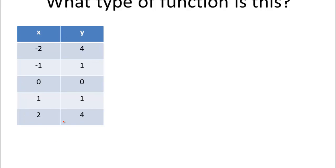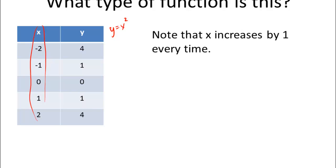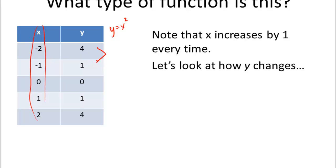Let's look at another example. You should recognize this data as y equals x squared. This is one of the reasons why it's important that you know your parent functions. Again, note that x is always increasing by 1: negative 2, negative 1, 0, 1, 2. Let's look at how y changes. We'll do 1 minus 4, which is negative 3. Zero minus 1 is negative 1. One minus 0 is 1. And 4 minus 1 is 3. Always the second minus the first.